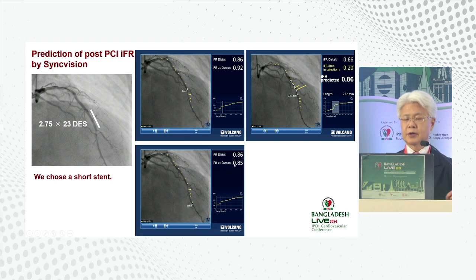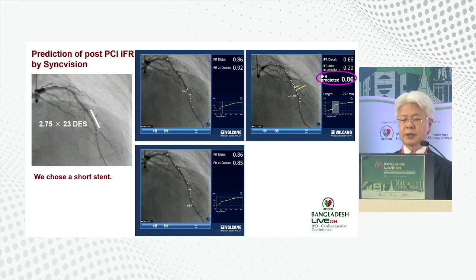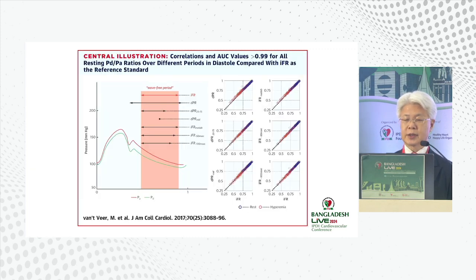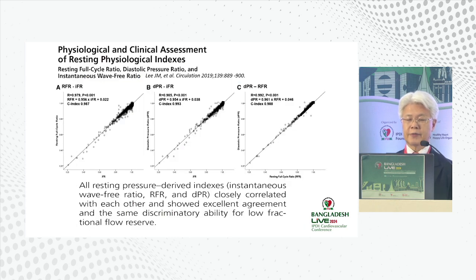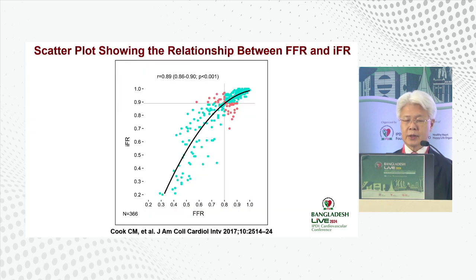The final result was IFR 0.86; the real measured value was 0.85 — very close to the speculation. You can predict final results using resting indices, which is very important. There is good correlation among resting indices: RFR, DPR, and IFR all correlate well. The cutoff point of resting indices compared with FFR 0.80 corresponds to approximately 0.89 in resting indices.